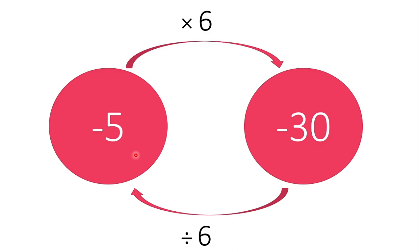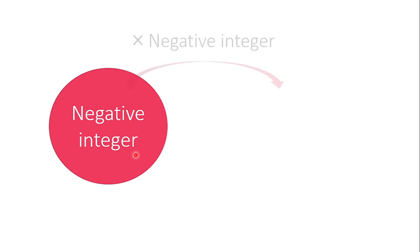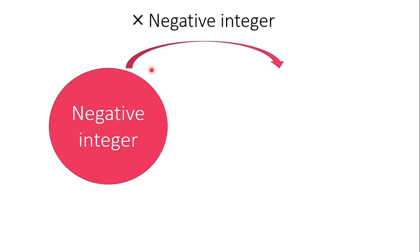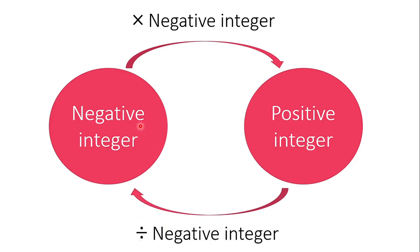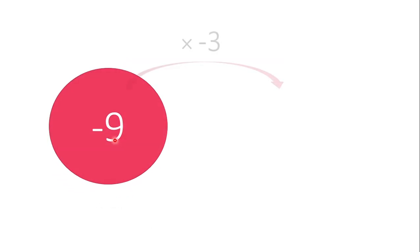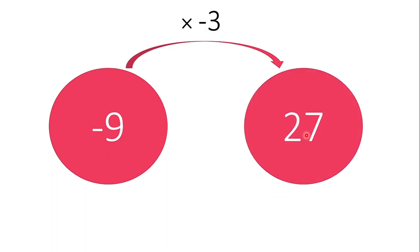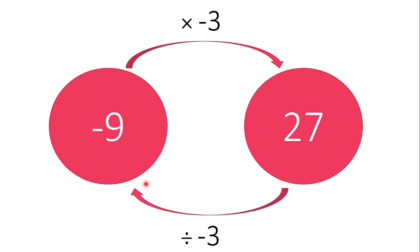Observe the following and then later on we'll summarize the rules. Another: a negative integer multiplied by another negative, the product is positive. But when we divide positive by negative, the quotient is a negative integer. Example, negative 9 times negative 3, the product is 27. But when we divide 27 by negative 3, the quotient is negative 9.